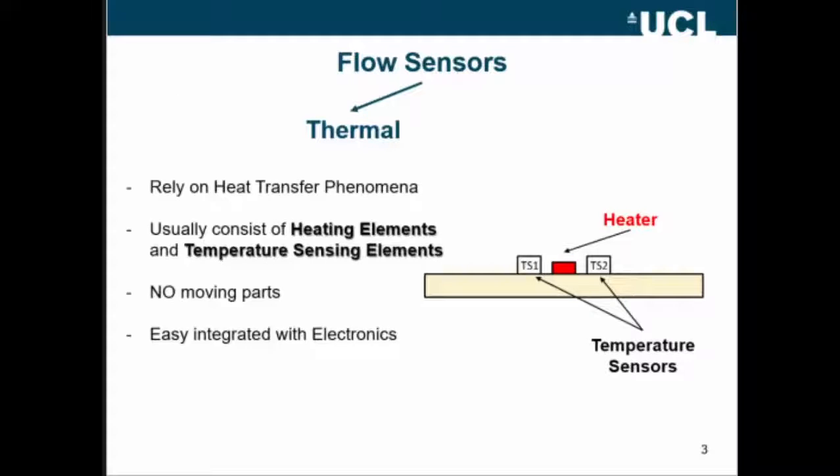Flow sensors can be basically divided into two main categories: thermal and non-thermal. Thermal rely on heat transfer phenomena, and they always have a heating element, at least, and most of the times, temperature sensing elements.